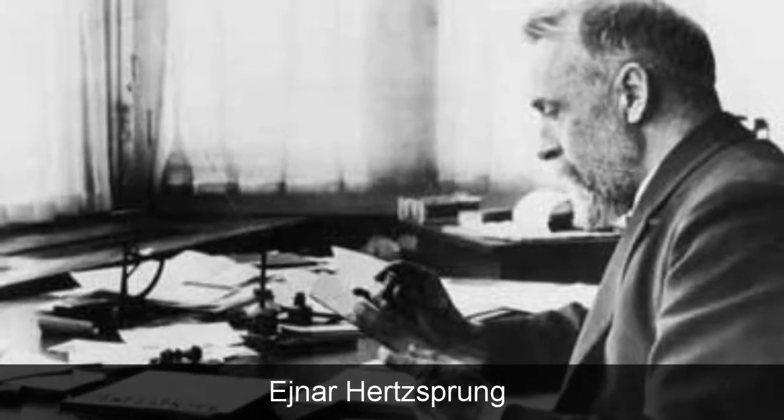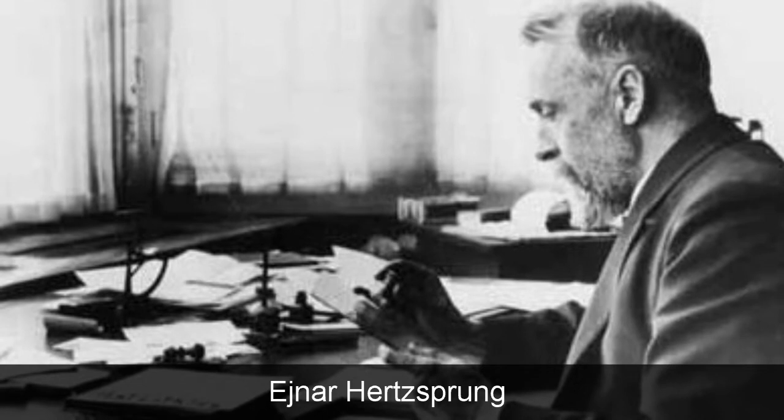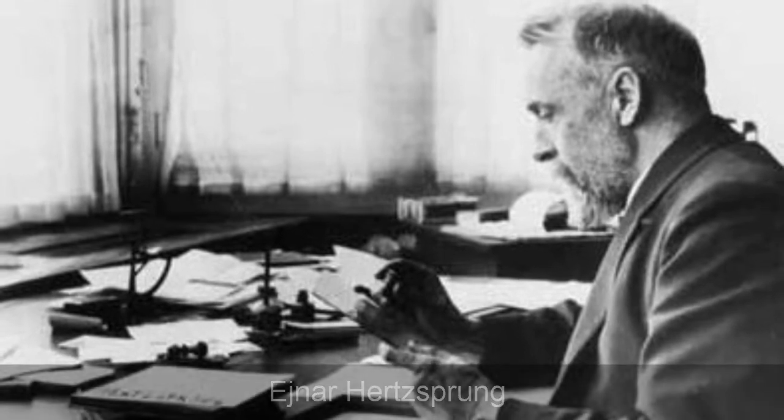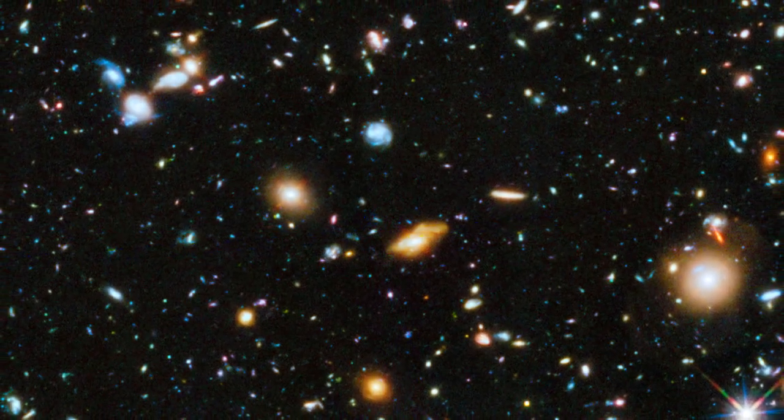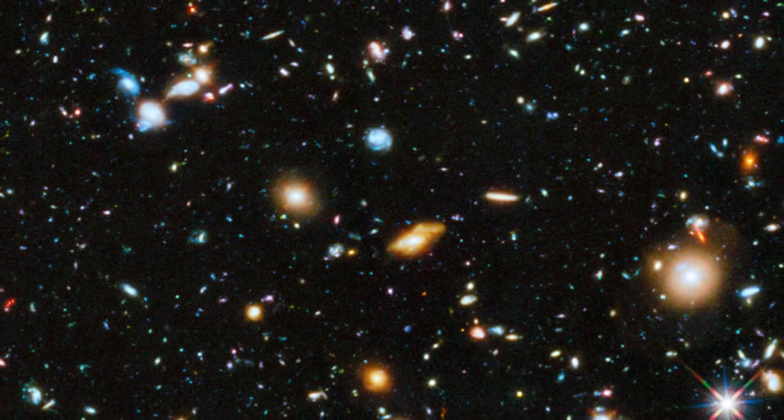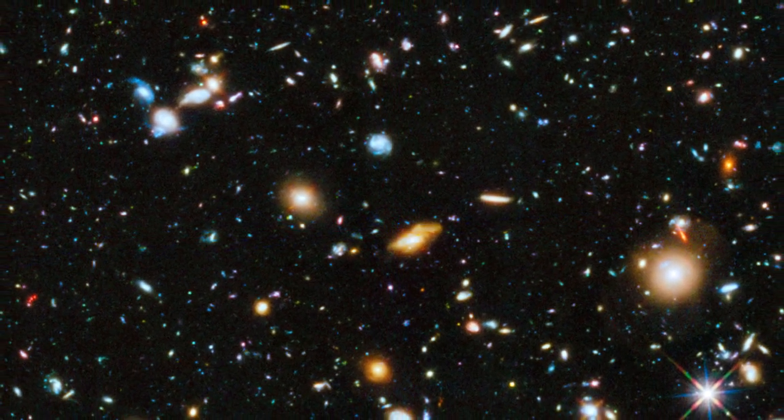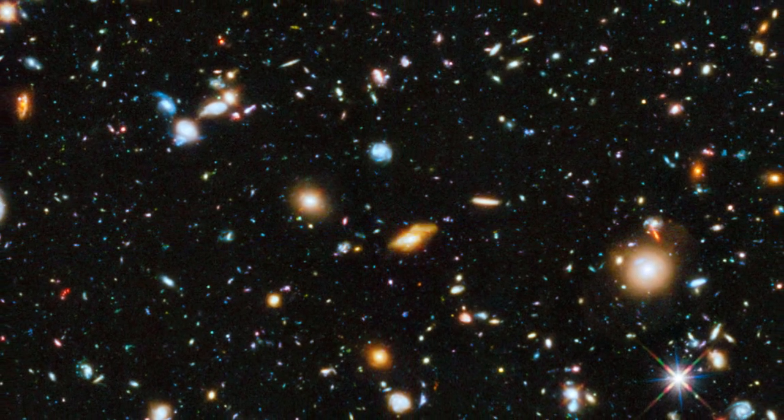One year after Levitt reported her result, Ejnar Hertzsprung determined the distance of several Cepheids in the Milky Way. And with this calibration, the distance to any Cepheid could be accurately determined. Because the distance to other galaxies could also be determined, they became an important part of the evidence that they were independent galaxies located far outside of our own Milky Way.